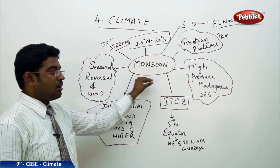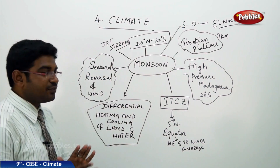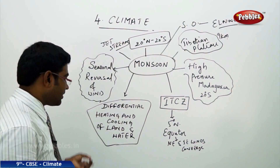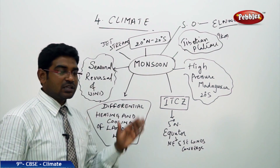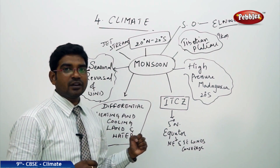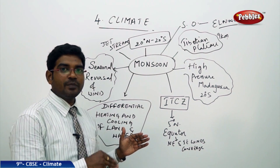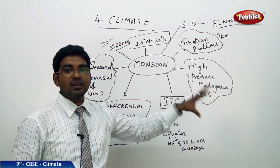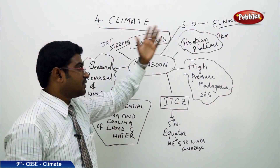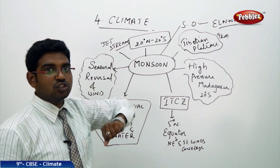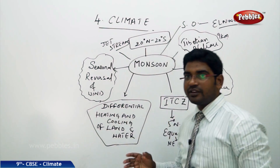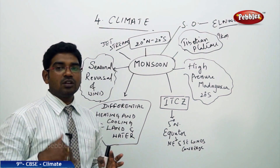To summarize, monsoons derive from the Arabic word 'mausam', meaning the seasonal reversal of wind, and occur only between 20 degrees north and 20 degrees south near the equator. They are caused by differential heating of land and water, the Intertropical Convergence Zone where southeast and northeast winds converge, high pressure belts in Madagascar, the high Tibetan Plateau about 9 kilometers above the Indian land, the Southern Oscillation or El Niño effect, and jet streams that visit India during summer and change wind patterns.